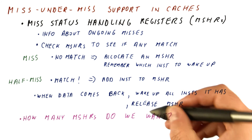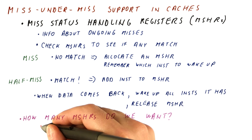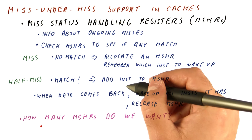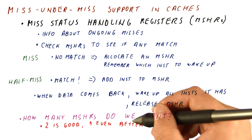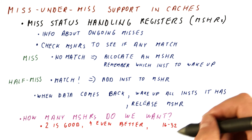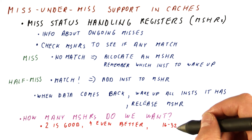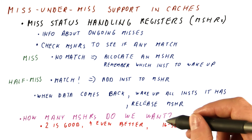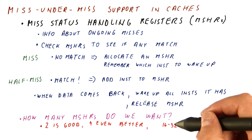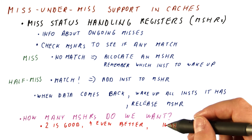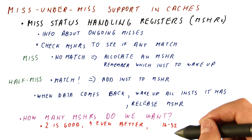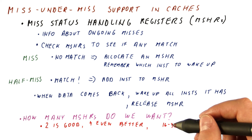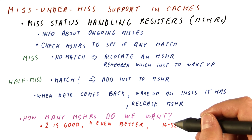How many MSHRs do we want to have? It turns out there is a huge benefit even if you only have two, so you can handle two different blocks in progress at the same time. Four is even better, and there are benefits to be gained even with 16 or even 32 MSHRs, so we want a few tens of MSHRs if we can. This is because memory latencies are relatively long, so if we keep sending requests to memory during that time, we can achieve memory-level parallelism of 16 or even 32, dramatically cutting down on the overall performance penalty of cache misses.